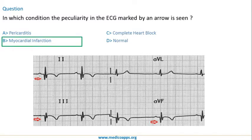You can rule out normal and complete heart block. Each P wave is transmitting into a QRS complex, so it cannot be complete heart block. As far as pericarditis is concerned, there is a separate lecture dedicated to that topic.